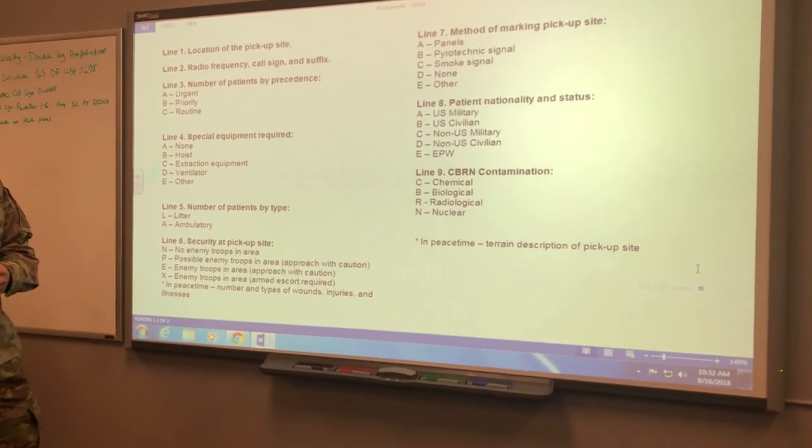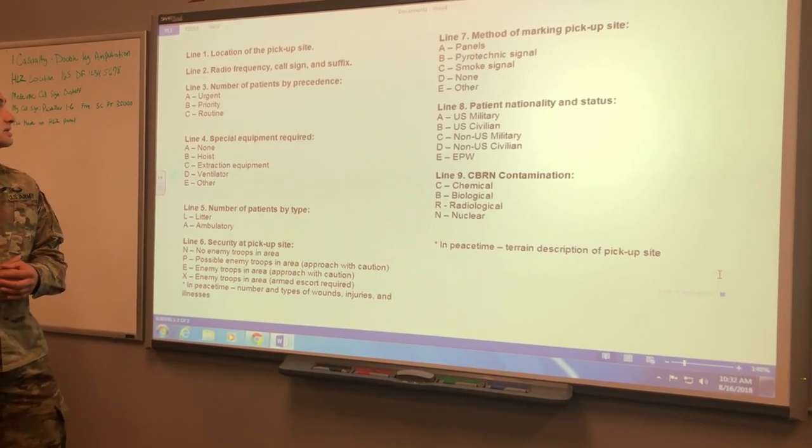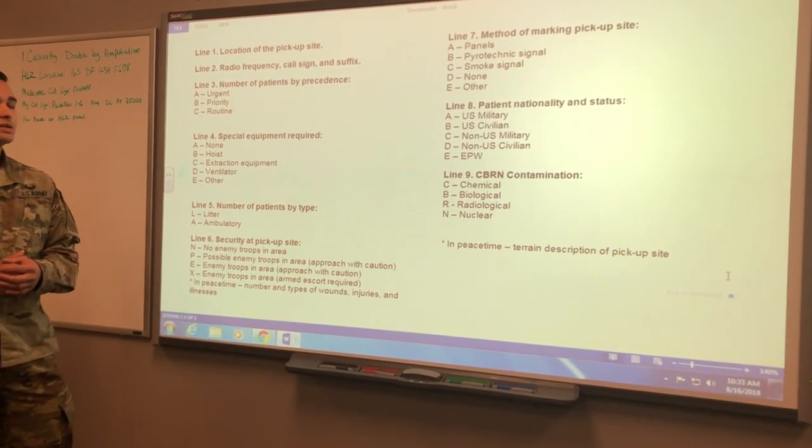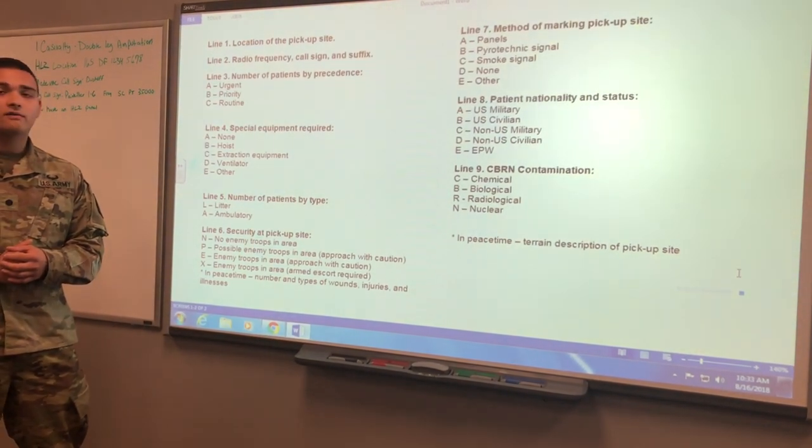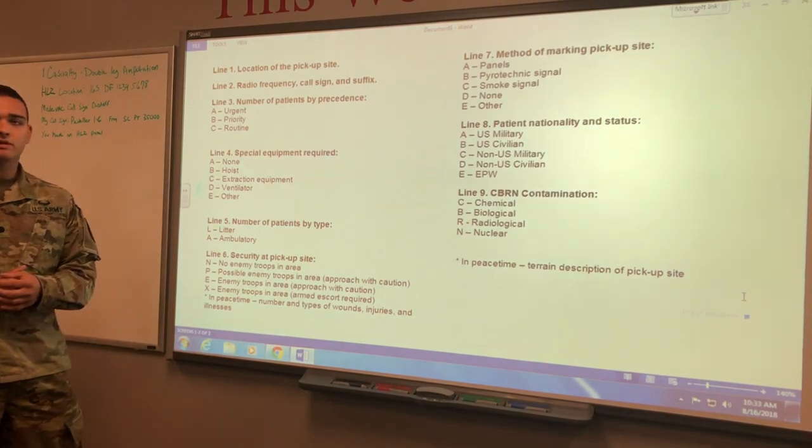Line three is number of patients by precedence. That's how urgently your patient needs to be seen. Alpha urgent means they need to be seen within two hours. Bravo priority means within four hours, and Charlie routine within 24 hours.